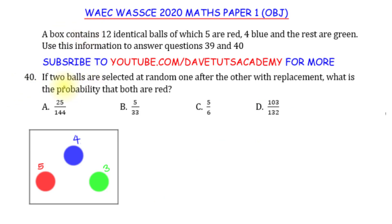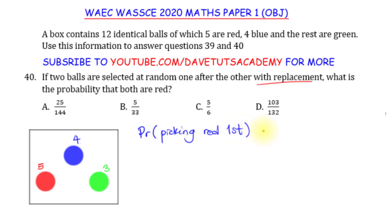In question 40, still using the same information, we are told that if two balls are selected at random one after the other with replacement, what is the probability that both are red? With replacement means that you first pick the ball, then before picking the second, you return it back into the box. The probability of picking a red ball first is the number of red balls, which is 5, over the total number of balls, which is 12.